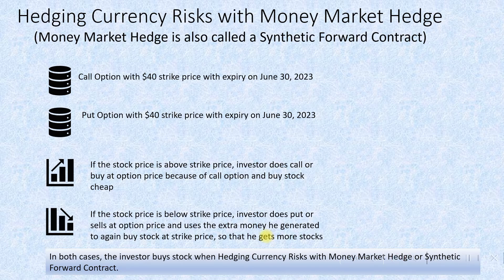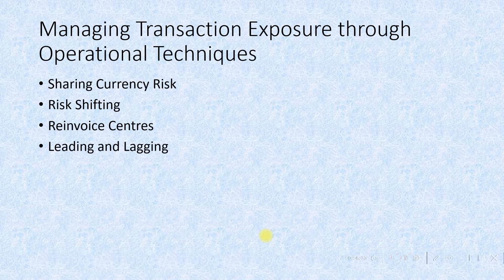In both cases, the investor ends up buying stock when hedging currency risk with a money market hedge or synthetic forward contract. The investor buys more stock with hedging currency risks using a money market hedge or synthetic forward contract.